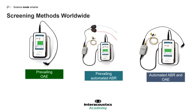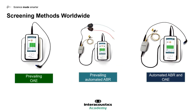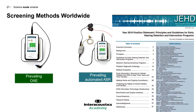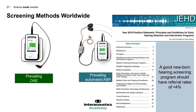Regardless of which method is chosen, there has been a body of research which demonstrates that each method has a high level of sensitivity and specificity at diagnosing hearing loss in newborns. Therefore, if we want to find the best of these three methods, we need to look at other factors. One such factor recommended by the Joint Committee on Infant Hearing is that a good newborn hearing screening program should have referral rates less than 4%.